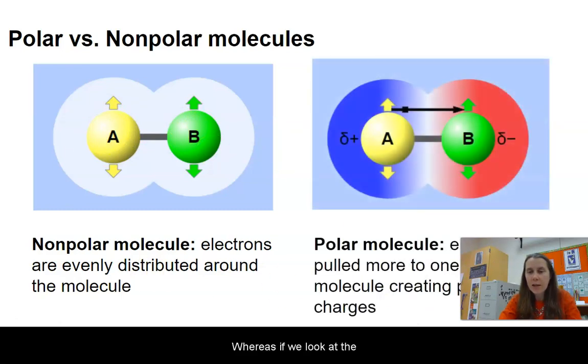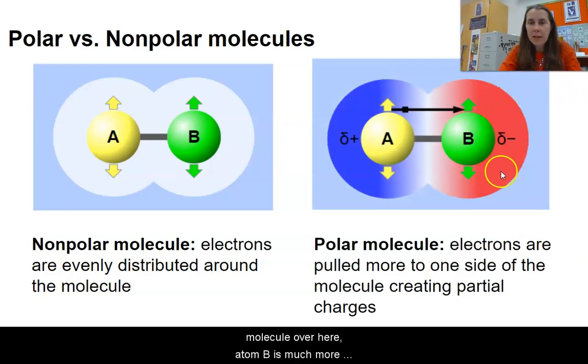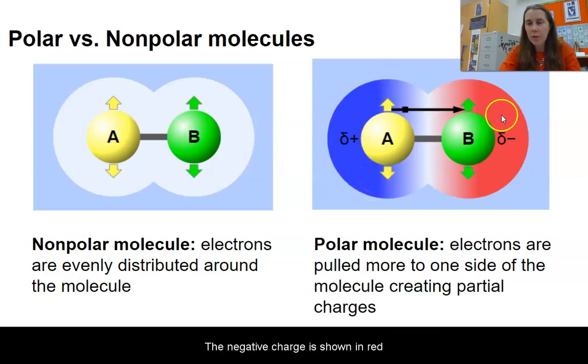Whereas if we look at the molecule over here, atom B is much more electronegative, which is why the arrow is pointing that direction. And now we've pulled all or a lot of the negative charge over here toward B, leaving the nucleus of A exposed and leaving positive charge over there. So here the negative charge is shown in red and the positive charge in blue.